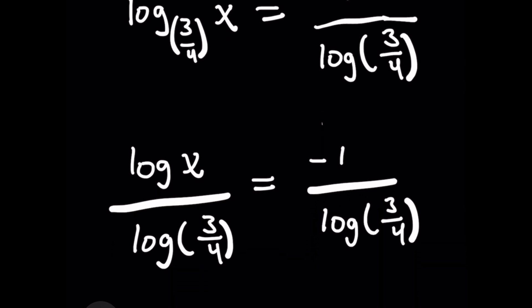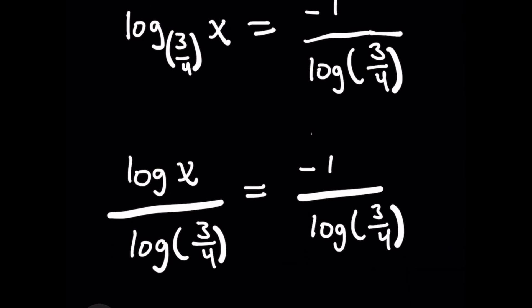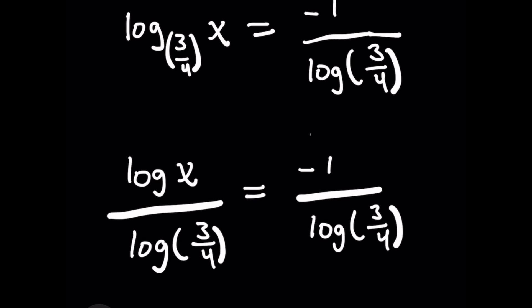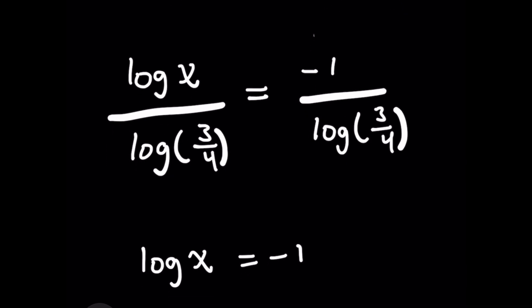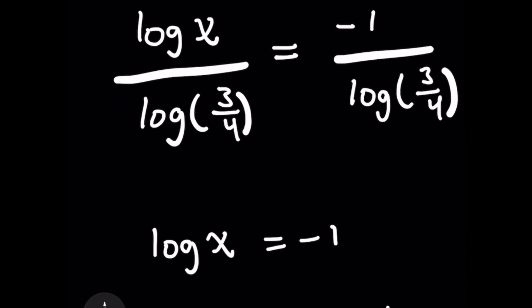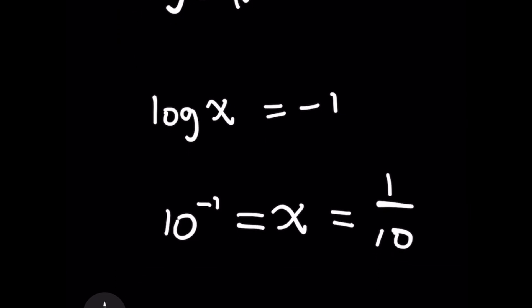The next thing you want to do is realize that when you have log base A of B on the left, it's the same as log of B over log of A, another logarithmic property. So we'll have log of x over log of 3 over 4 equals negative 1 over the log of 3 over 4. When you multiply both sides by log of 3 over 4, you'll find that log of x is negative 1.